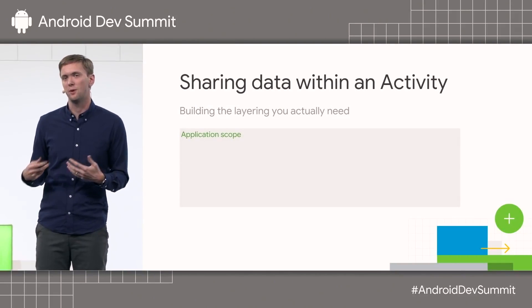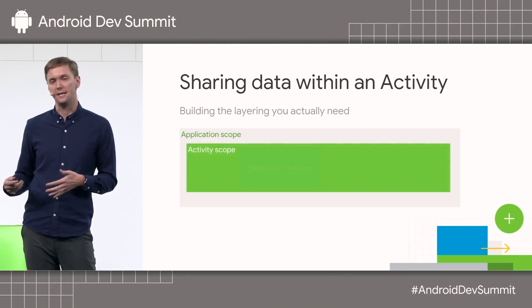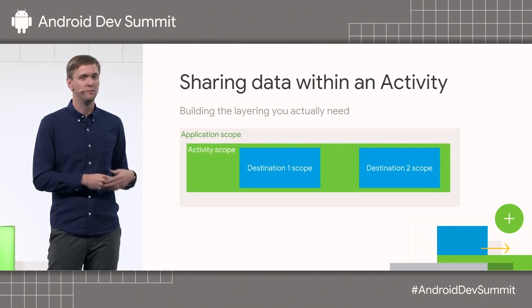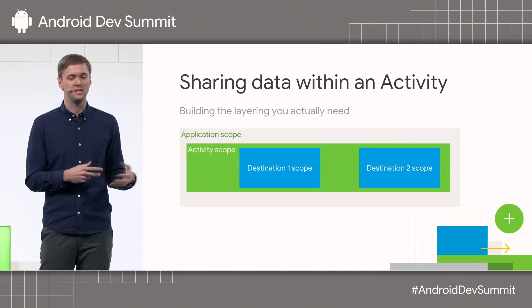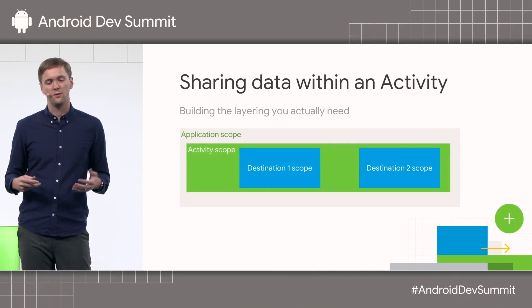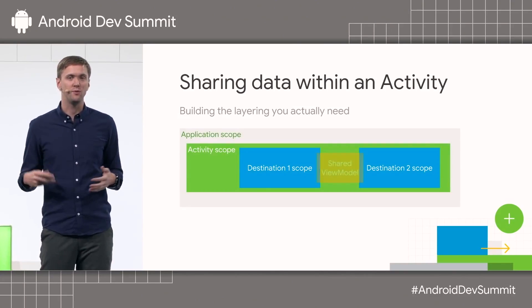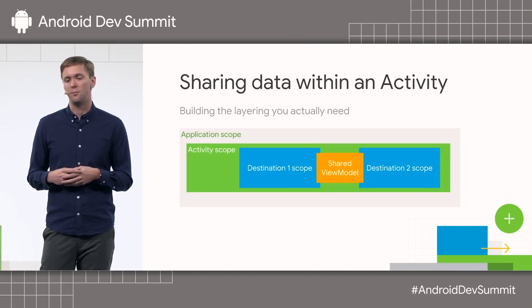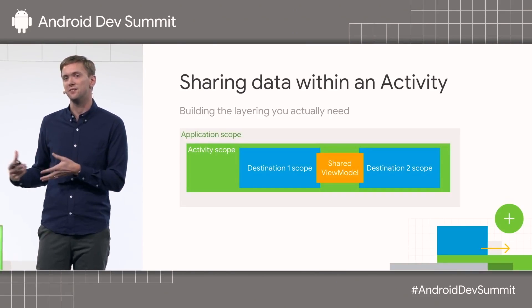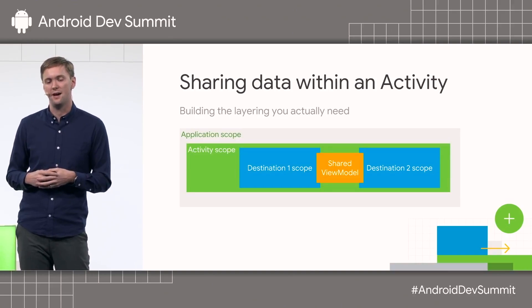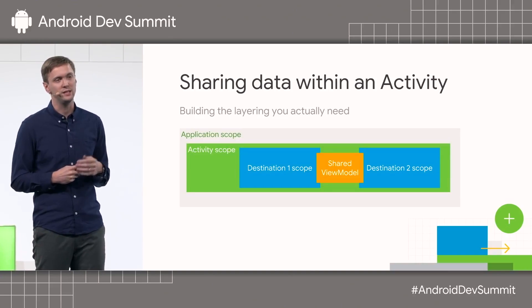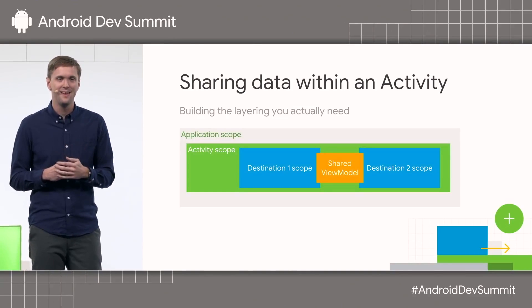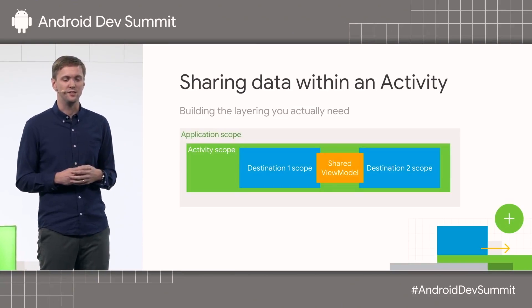What you actually want is to build the layering you actually need. In this case, we can have multiple destinations within an activity, and share information across each of these destinations by using the activity scope as an actual useful element. For example, you could have a shared view element or ViewModel that both destinations talk to.